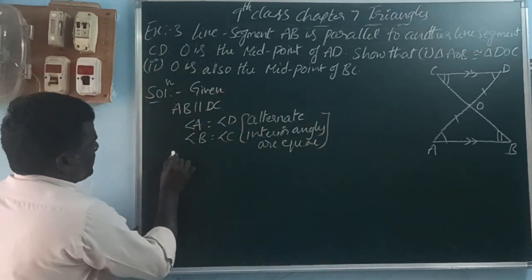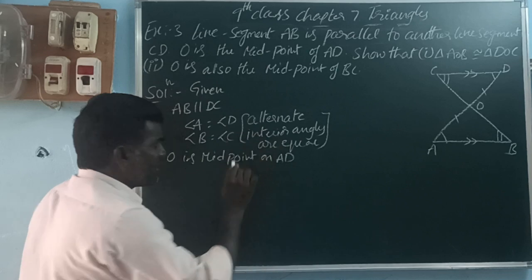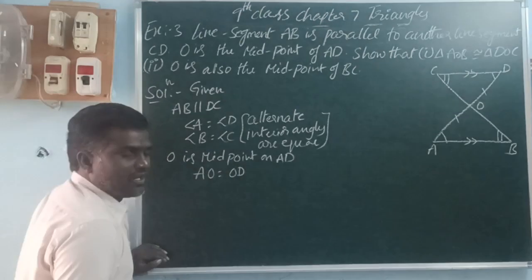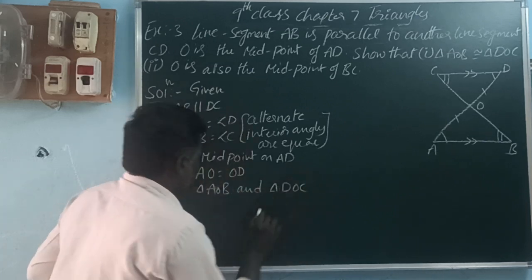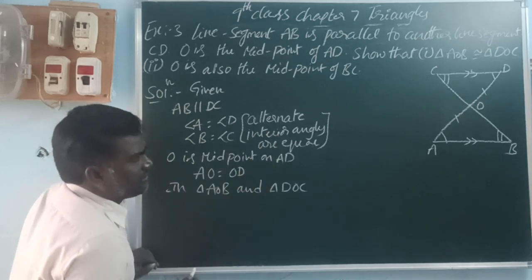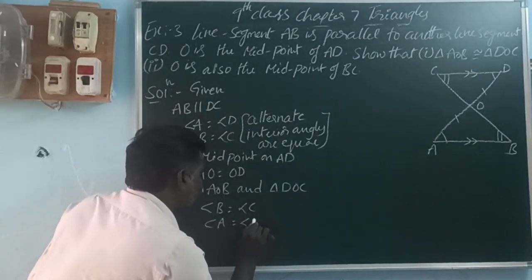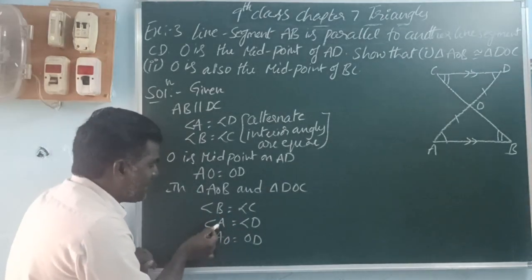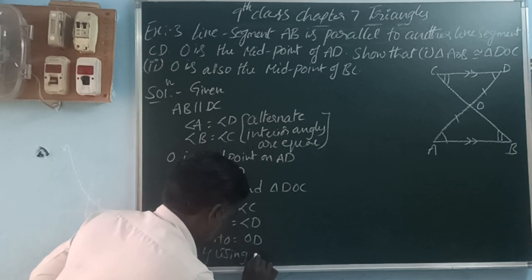Again, O is the midpoint on AD. The midpoint divides the line into two equal parts, so AO is equal to OD. In triangle AOB and triangle DOC: angle B equals angle C, angle A equals angle D, and AO equals OD. So by the Angle-Side-Angle or Angle-Angle-Side congruency rule, using triangle Angle-Side congruency,